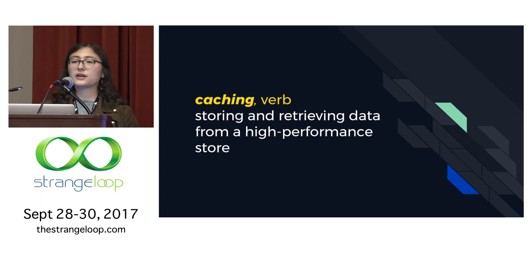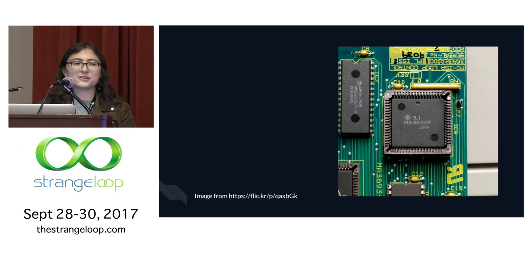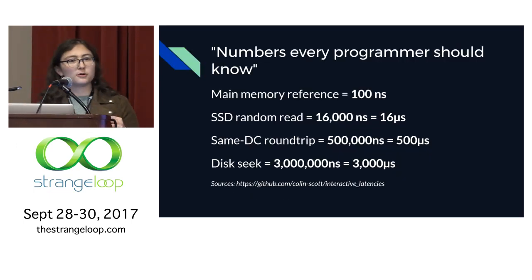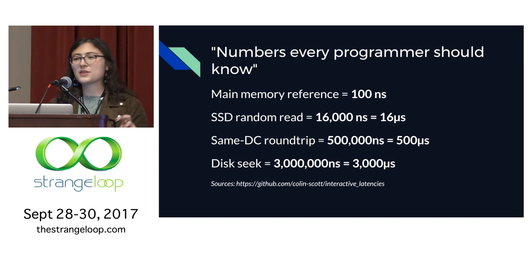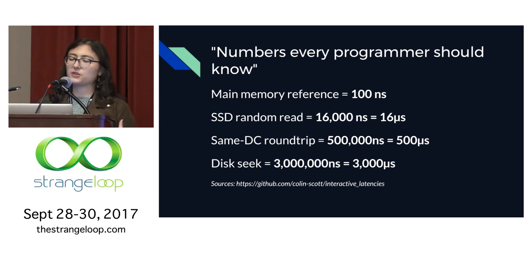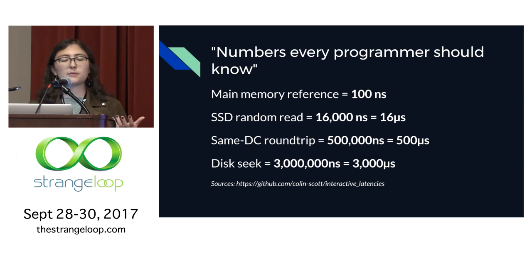When I say caching, I mean storing and retrieving data from a high-performance store — not hardware caches like L1/L2. We're talking about the principle of caching as it applies to distributed systems. These are the numbers every programmer should know. They're mostly folklore, but the utility comes from the orders of magnitude between each step, giving us good intuition for reasonable designs. This is why we use caching — reading from memory is much, much faster than reading from hard disk.